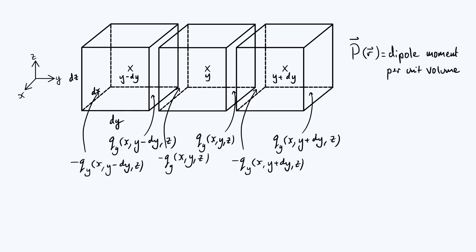The next thing we want to know is how can we write those accumulated charges in terms of the polarization vector P. I'm just going to start by writing down q subscript y as a function of r, just shorthand for x, y, z.